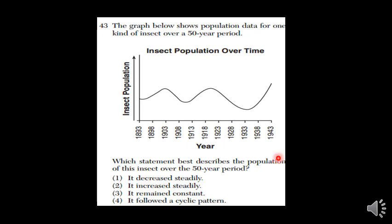The graph below shows population data for one kind of insect over 50 years. Which statement best describes the population of the insect over this 50-year period? We can see here's our years on the bottom — this is our independent variable. A lot of times if you have time, it's going to be on the bottom. And then we have our insect population over on the side. The higher you go, the greater the number of those insects.